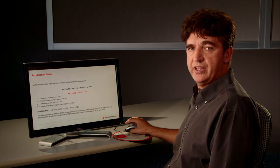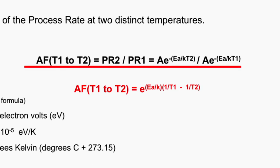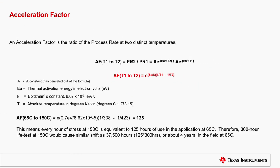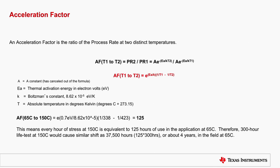Before I conclude our conversation, I'd like to touch on an important topic of the process rate and the so-called acceleration factor. The equation here shows how the process rate changes at different temperature. In this example, I'm comparing the process rate at 65 degrees C to a process rate at 150 degrees C, where most of our products undergo live tests. In this case, calculating the acceleration factor, we're coming up with the number of 125. This means that every hour of stress at 150 degrees C is equivalent to 125 hours of continuous operation at 65 degrees C. Therefore, a 300-hour live test at 150 degrees C would cause similar shift in a product as the 37,500 hours or about 4 years of continuous operations in a field at 65 degrees C.